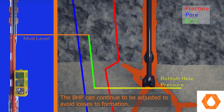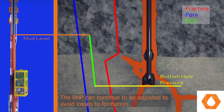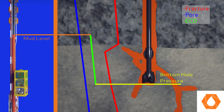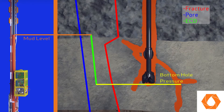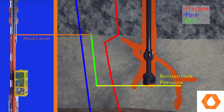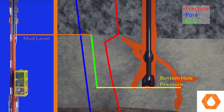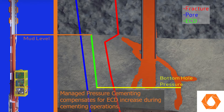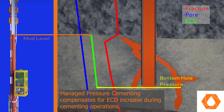EZDrill is also utilized for managed pressure cementing, where the drilling fluid level is adjusted during cementing operations to maintain cementing ECD below fracture pressure. Managed pressure cementing is a unique tool that can compensate for the ECD increase from the heavier cement densities during displacement,